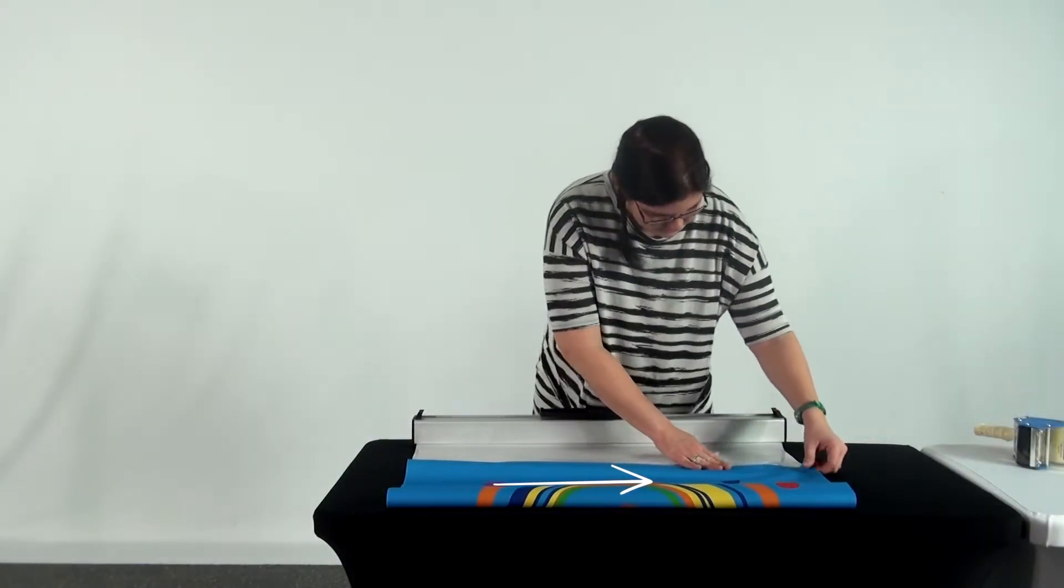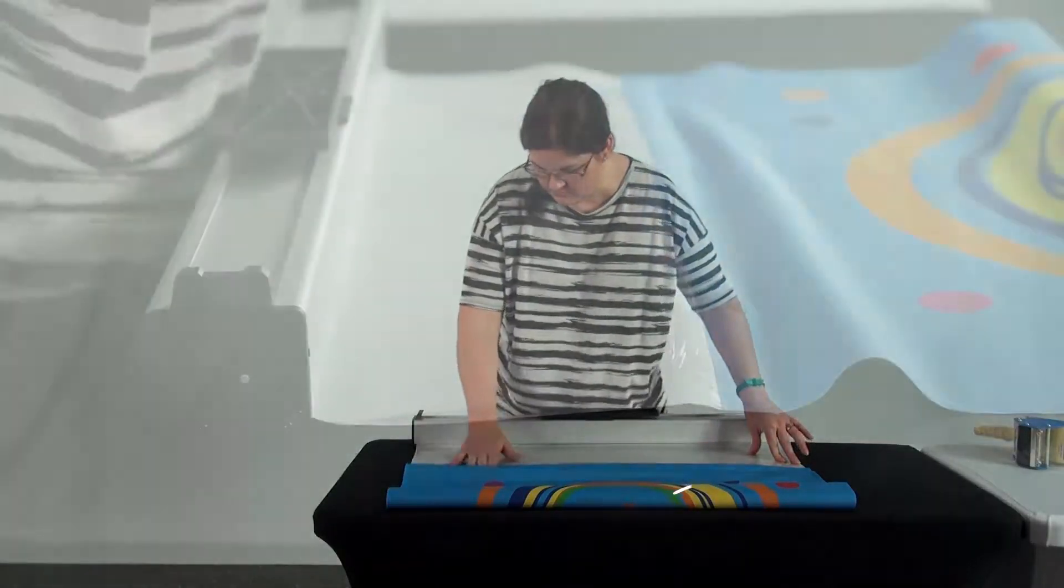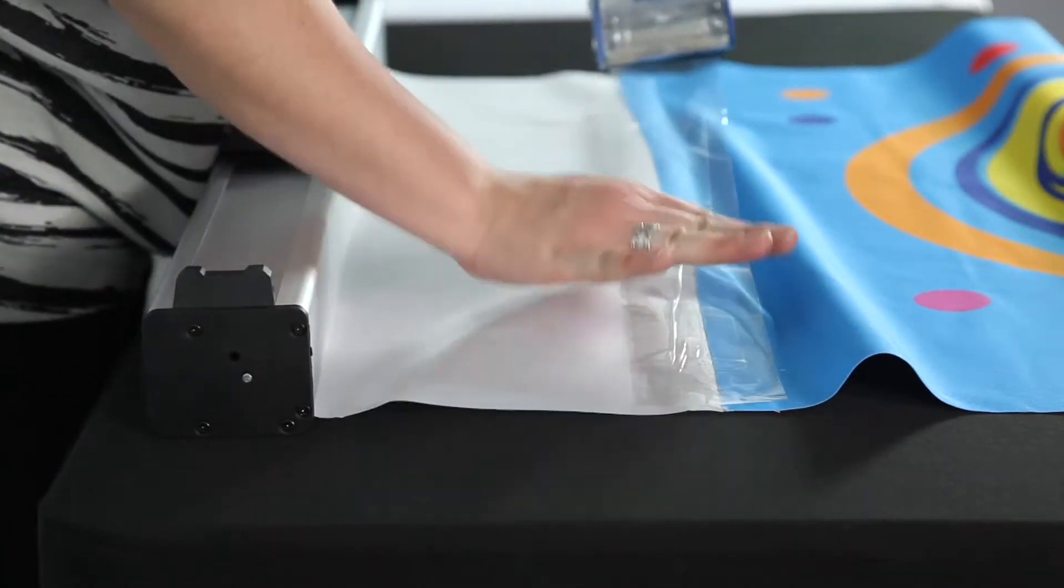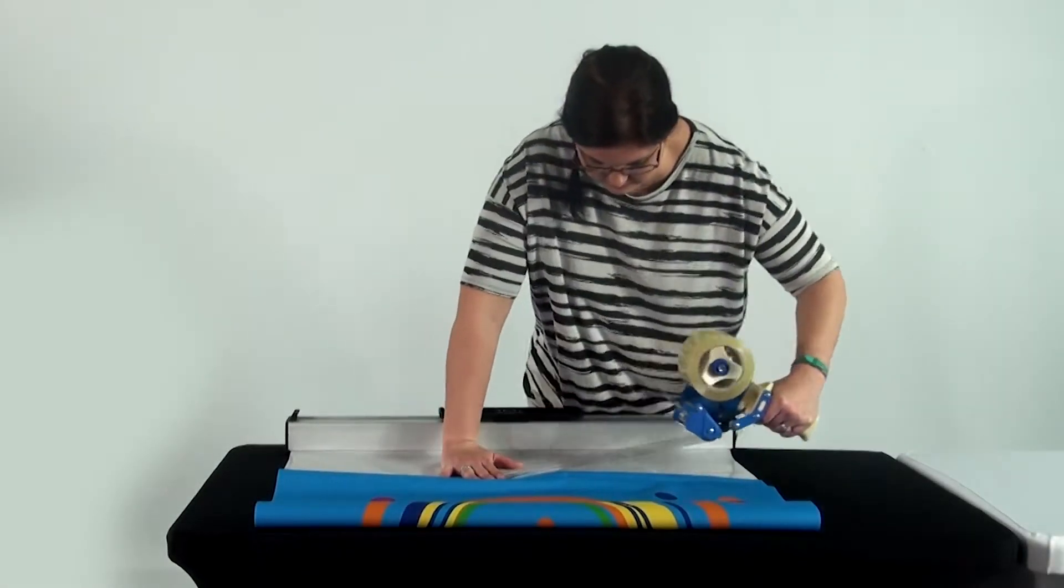Work from one side and move to the opposite side. Make sure to smooth out any wrinkles and slowly apply packing tape where the banner meets the plastic material. This reinforces the base's hold on the banner.